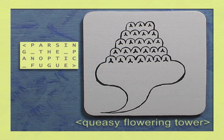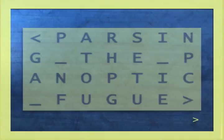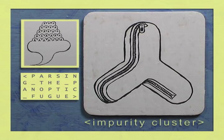Parsing the panoptic fugue, the visual-cognitive disambiguation of a figurative array drawn through a loop. Let's return to the Queasy Flowering Tower and take a closer look at one of the individual bits. They are termed impurity clusters. It appears from this magnified view that the schematic representation was accurate as to their tripartite form.